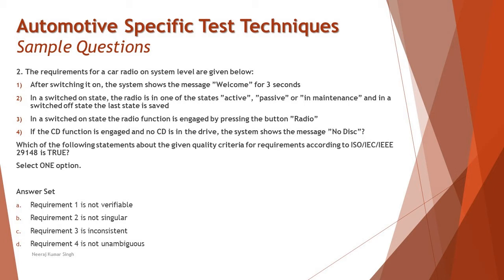The question asks: which of the following statements about the quality criteria for requirements according to ISO/IEC/IEEE 29148 is true? We need to identify what to look for when reviewing a requirement, as this is about static testing. The four options are: A — requirement one is not verifiable; B — requirement two is not singular; C — requirement three is inconsistent; D — requirement four is not unambiguous — meaning it is actually ambiguous. Be careful with such double-negative phrasing.